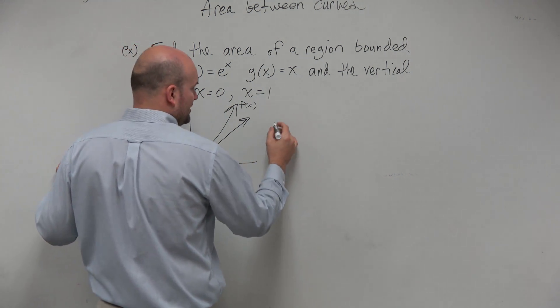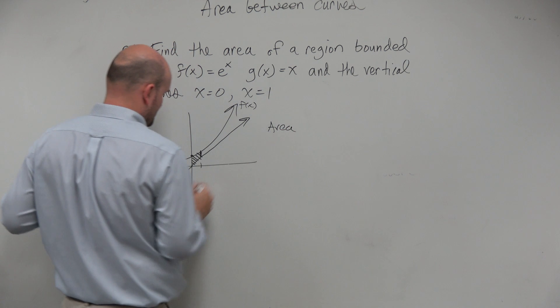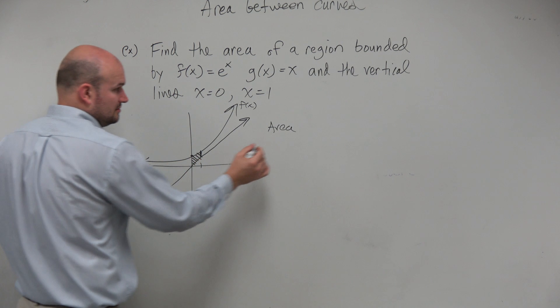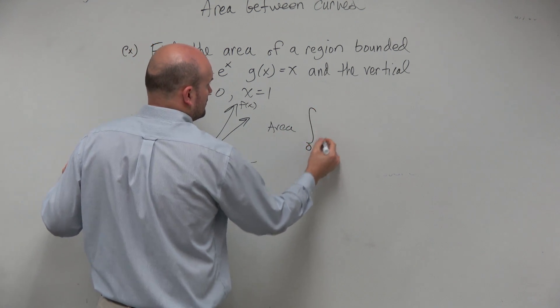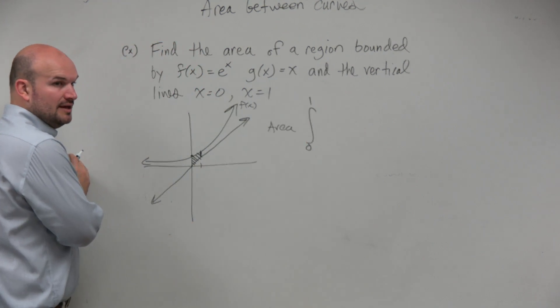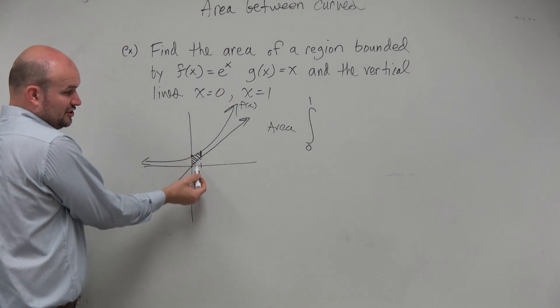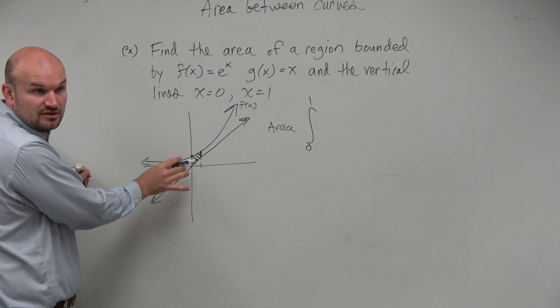So when we want to find the area of this region, we know we want to find the area bounding from 0 to 1. And we basically want to find the area under the curve g of x. But then again, we're subtracting f of x, correct?